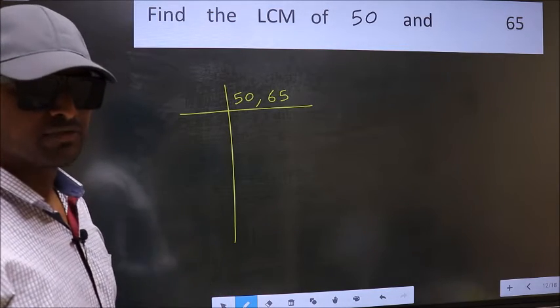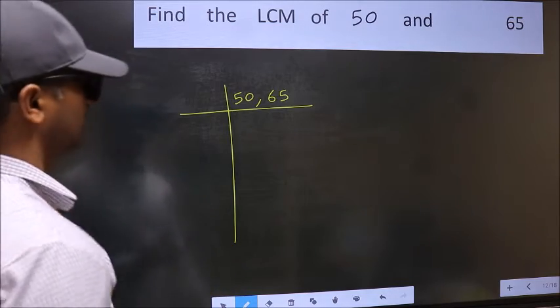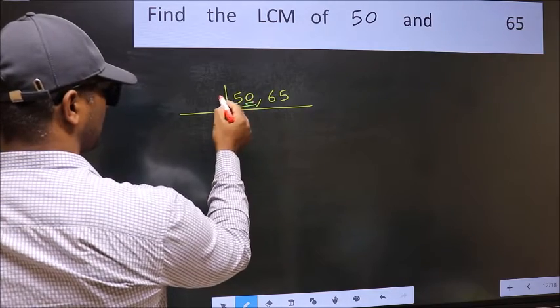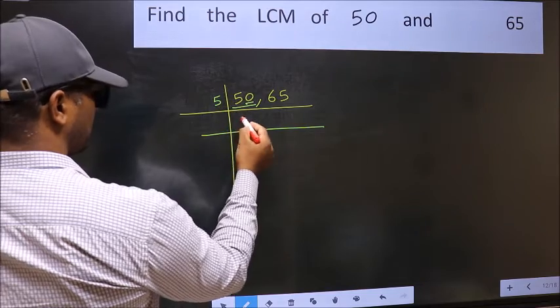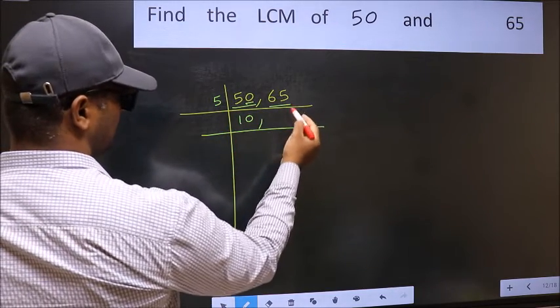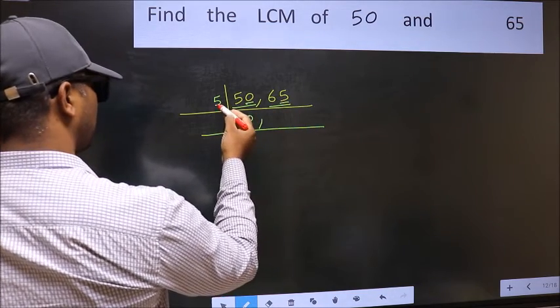Now focus on the first number, which is 50. The last digit is 0, so take 5. When do we get 50 in the 5 table? 5 times 10 is 50. The other number, 65, has last digit 5, so it's divisible by 5.